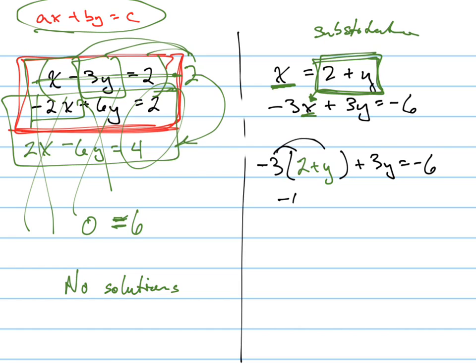Distribute this in first, so that's negative 6 minus 3y plus 3y equals negative 6. Hey, guess what happened again? All the variables cancel out, but this time what happened when they all cancel out? Negative 6 equals negative 6. That's always true. So what's my solution? Infinite solutions.